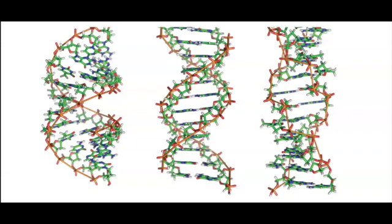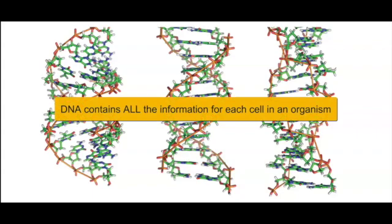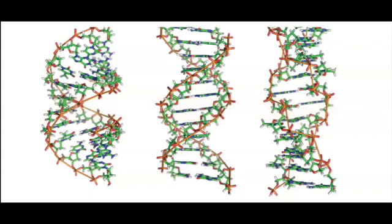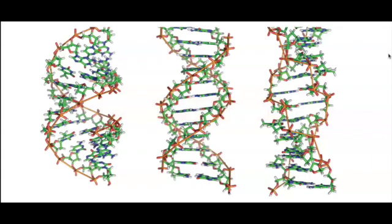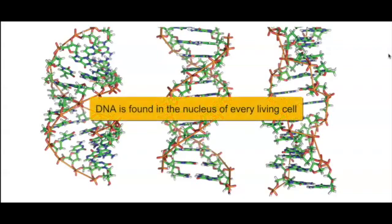We know that DNA contains all the information for each cell in an organism. That information is equivalent to the blueprints to make an entire house, or the recipes to cook an entire meal, or the instructions to build a toy. DNA is the instructions for life, and that's for life of any organism, including you. DNA is found in the nucleus of every living cell.